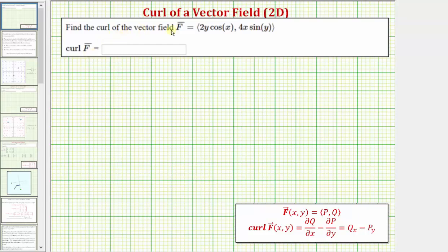We want to find the curl of the vector field f. Notice in this case, the vector field f is a two-dimensional vector field. The curl of a two-dimensional vector field and the curl of a three-dimensional vector field are different. Before we discuss the difference, let's review what the curl of a vector field actually tells us.